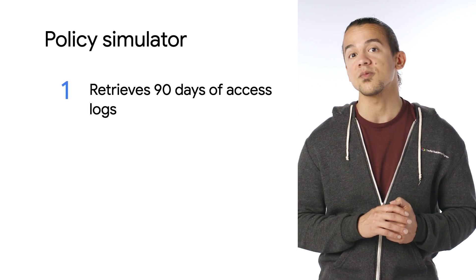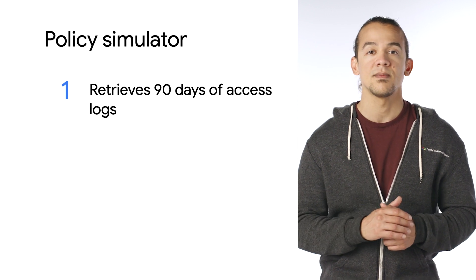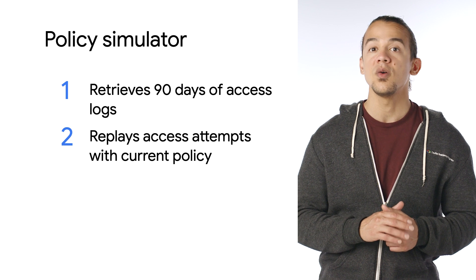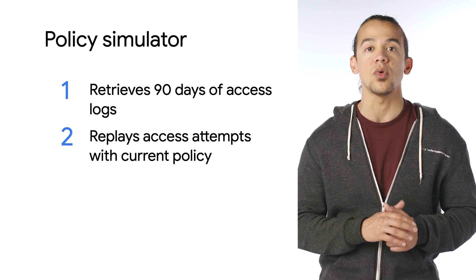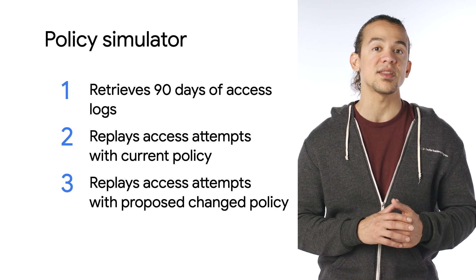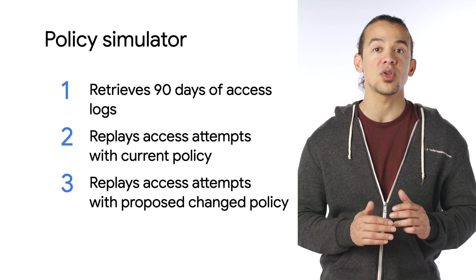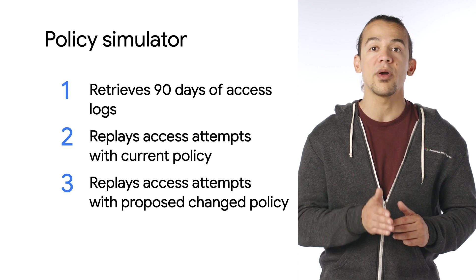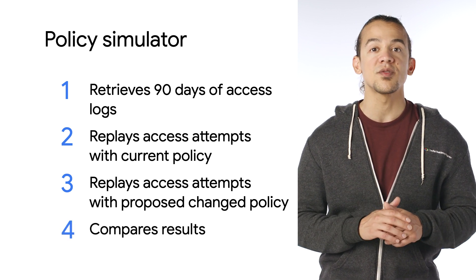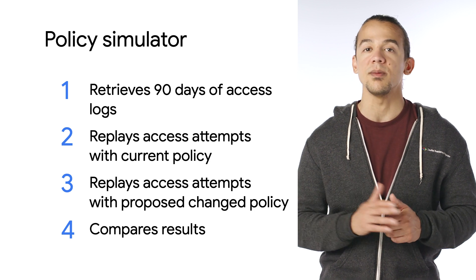Policy Simulator will then take your proposed changes and run them through several steps. First, it retrieves the access logs from a project from the last 90 days. Then, it replays the access attempts using the current policy, where the user has the project owner role. Next, it replays the access attempts again using the proposed permissions policy, where the user doesn't have the project owner role, but rather the BigQuery admin role. Finally, it compares the results from the two replays and reports the differences between them.